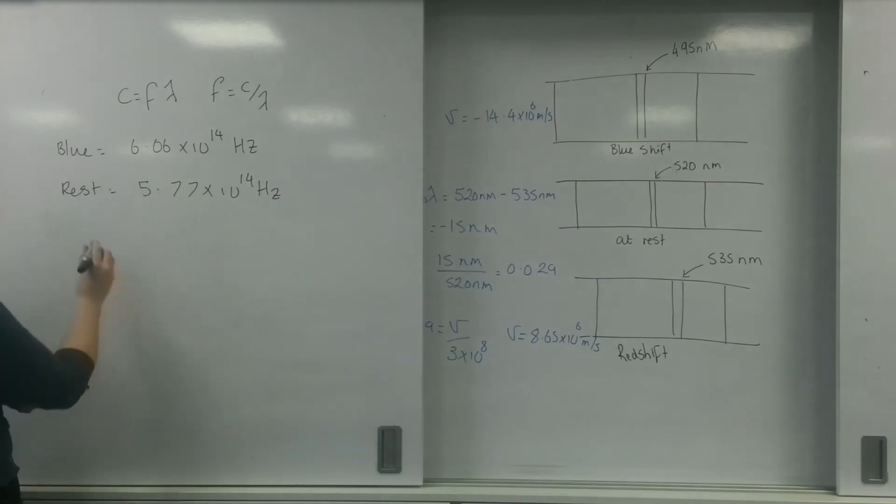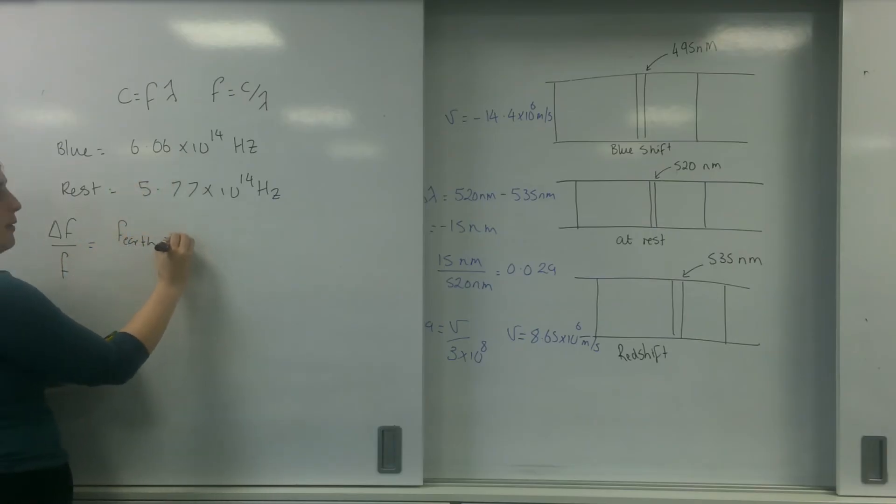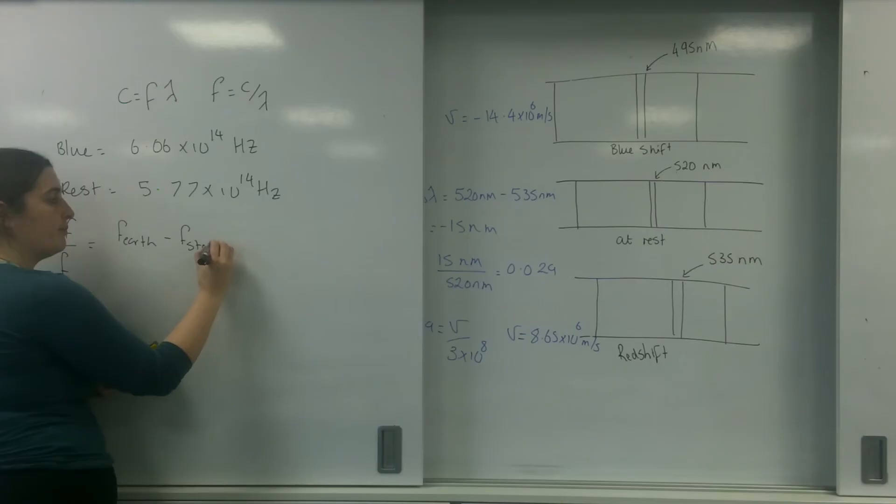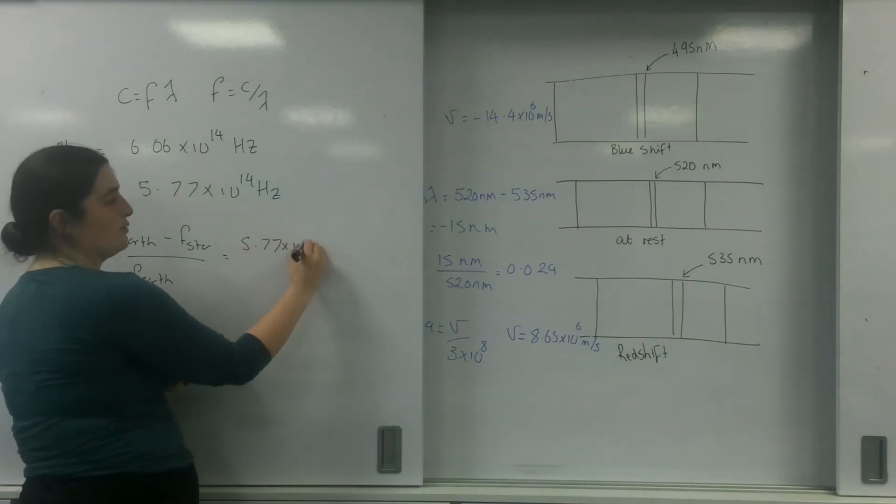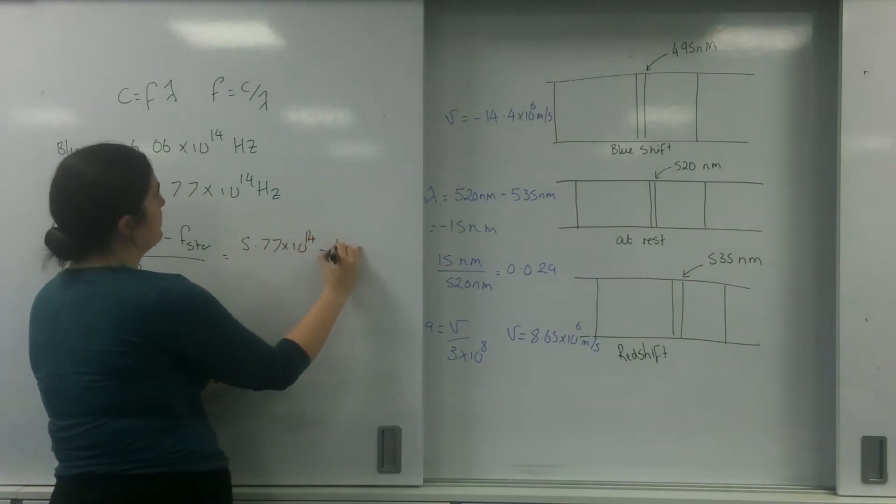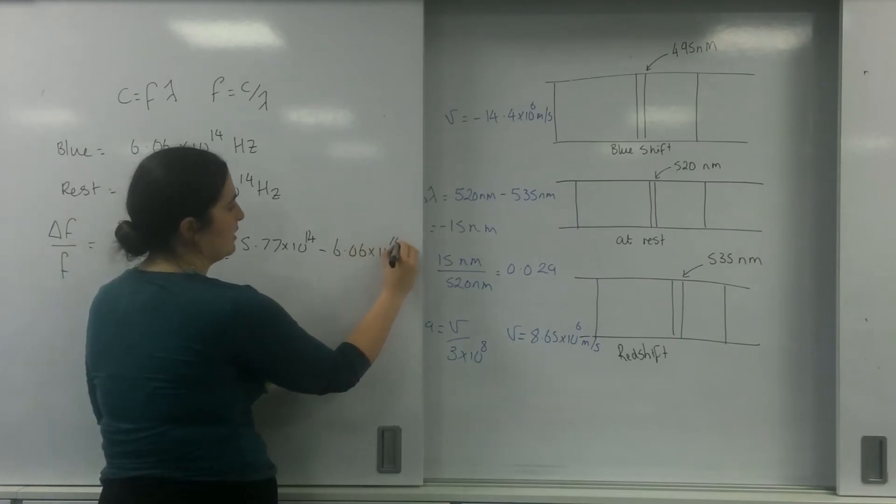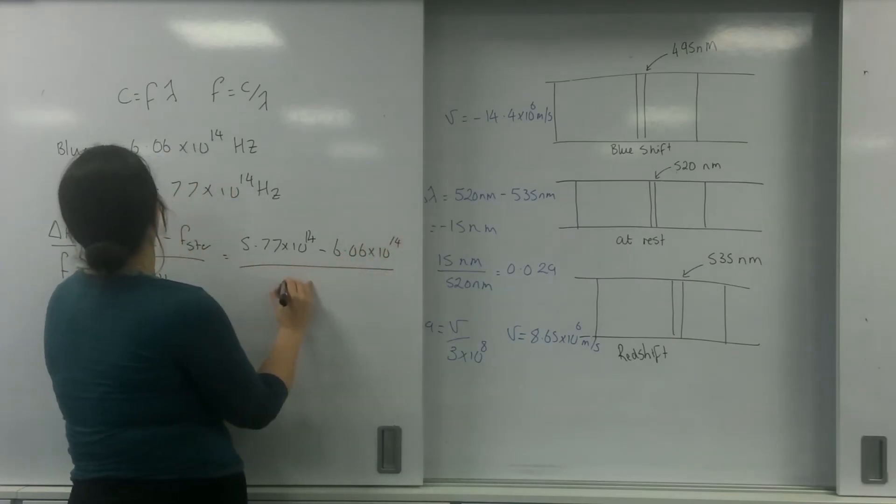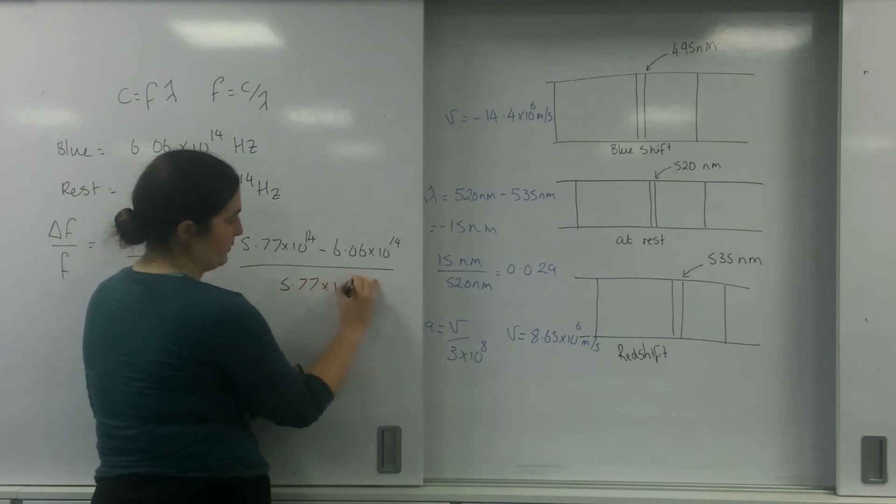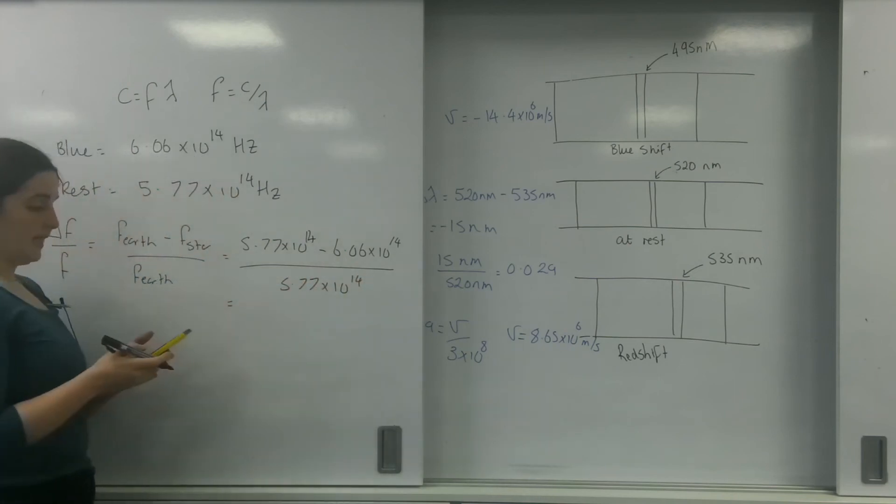Now let's use my change in frequency over frequency formula instead. So what I'm going to have, remember it's earth take away what it is. So it would be frequency of the earth minus the frequency from the star over the frequency from earth. So that's going to be 5.77 times 10 to the 14 minus 6.06 times 10 to the 14 all over 5.77 times 10 to the 14.